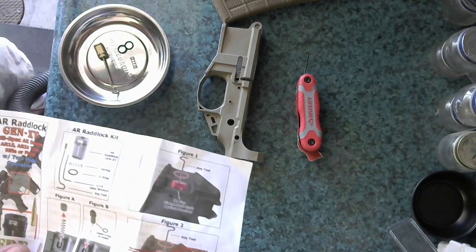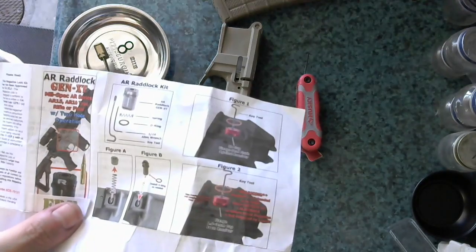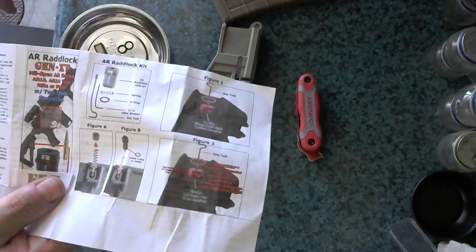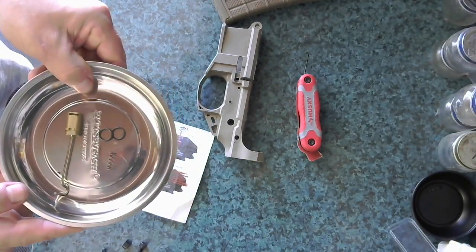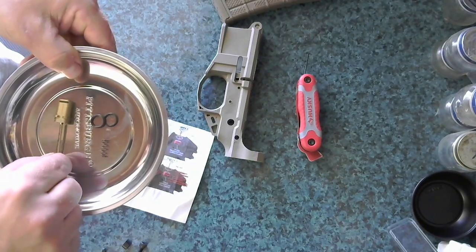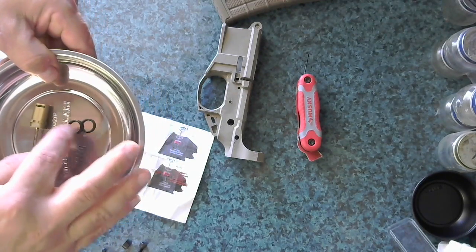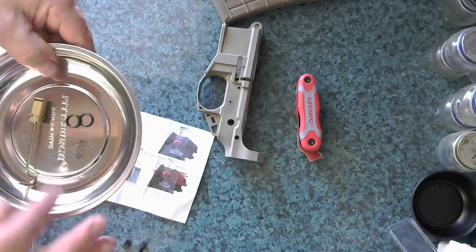Double checked, even had a second set of eyes take a look, and it wasn't there. So what I did end up with was what's in here, which is the tool, the button, the two O-rings, and a spring.